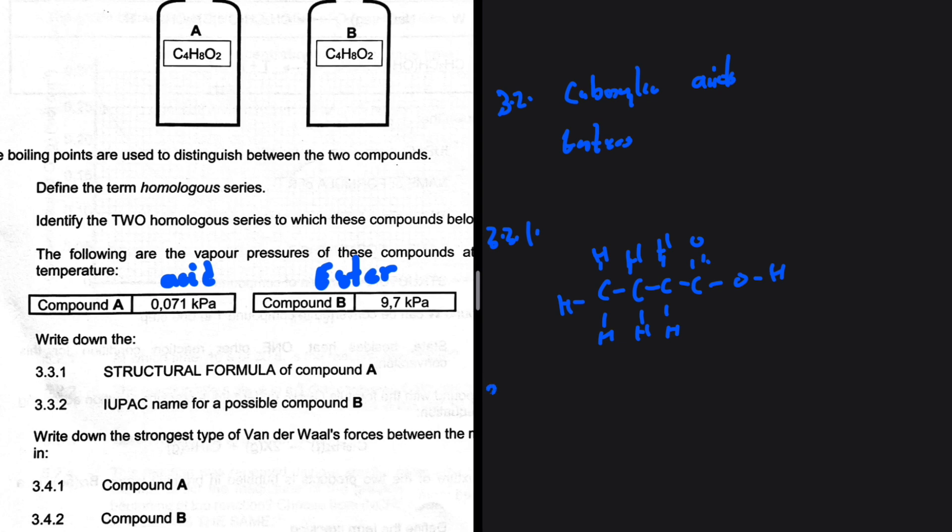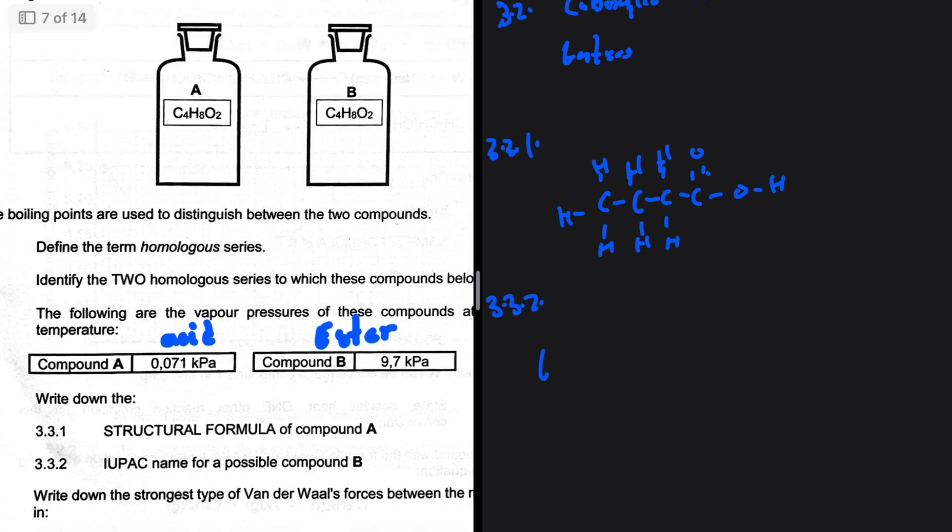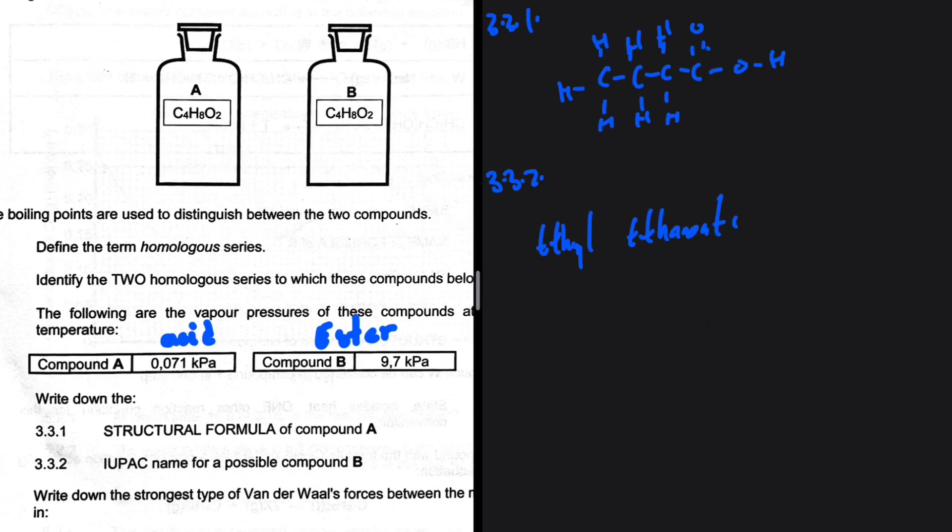3.3.2 IUPAC name for a possible compound B. So compound B is an ester with four carbons, so it can be ethyl ethanoate, it can also be propyl methanoate, it can be methyl propanoate. Those are some of the options that we have.